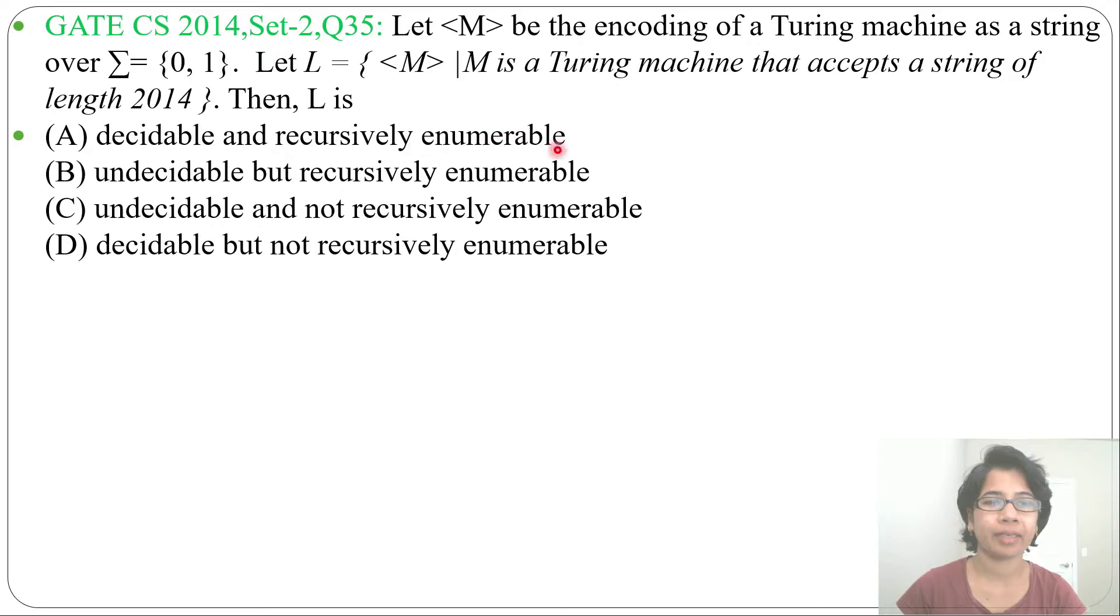decidable and recursively enumerable. Option B, undecidable but recursively enumerable. Option C, undecidable and not recursively enumerable. Option D, decidable but not recursively enumerable.